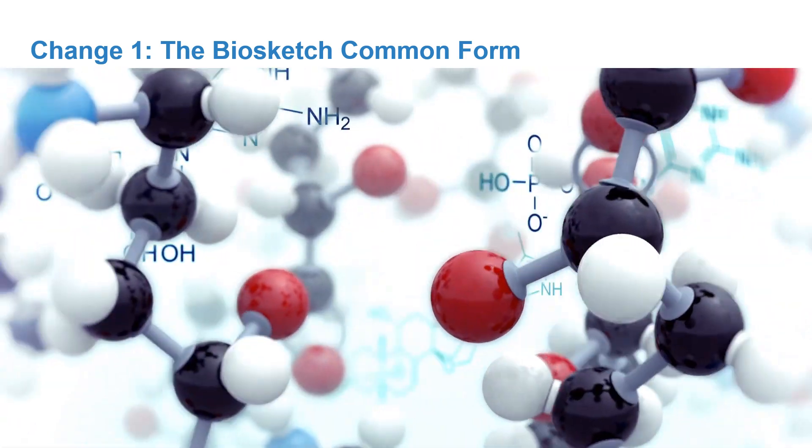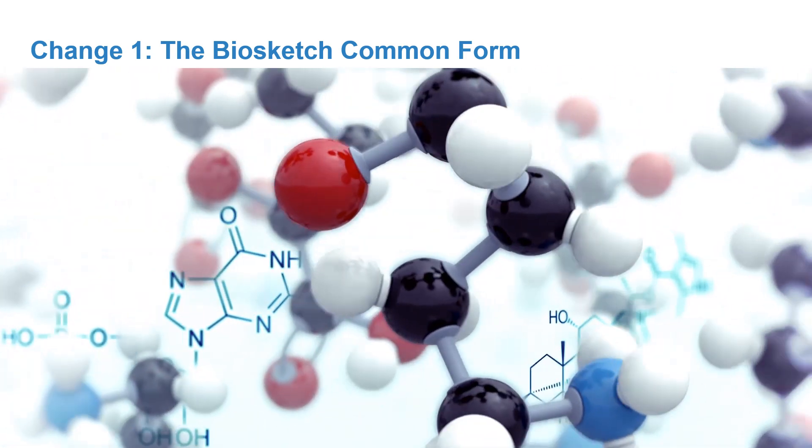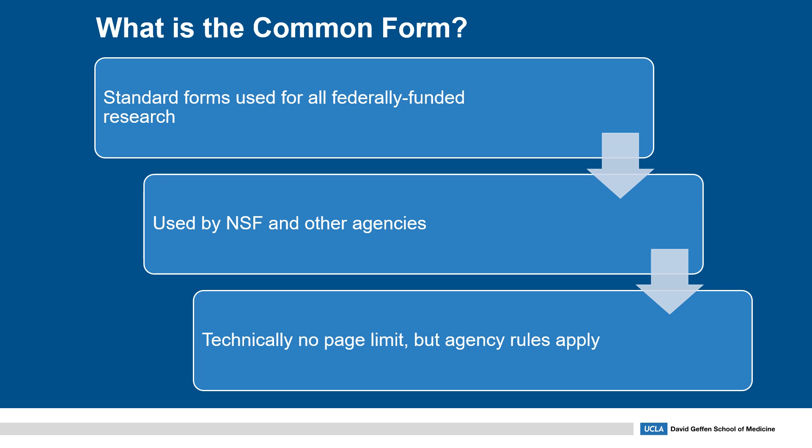First up is the biosketch common form. The biosketch common form is the standard form that's typically used for all of your federally funded research. Those of you who are familiar with NSF applications will recognize this as the NSF biosketch, but it's used by other federal awarding agencies as well. Unlike the current NIH biosketch, the common form doesn't have a page limit, but each agency may apply their own guidelines to this form.